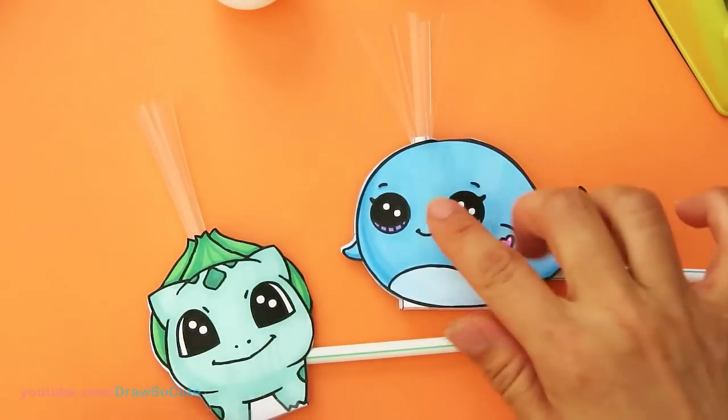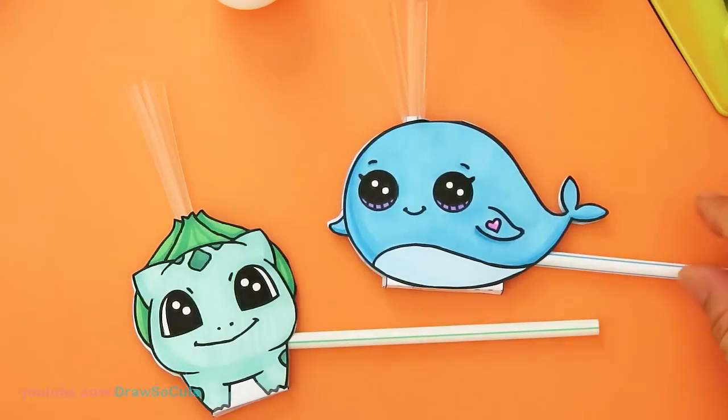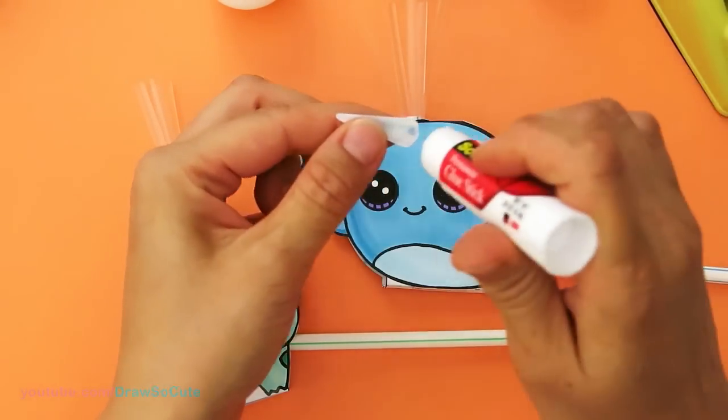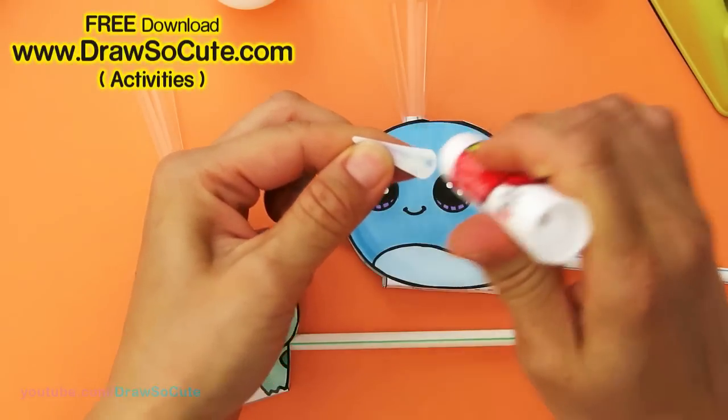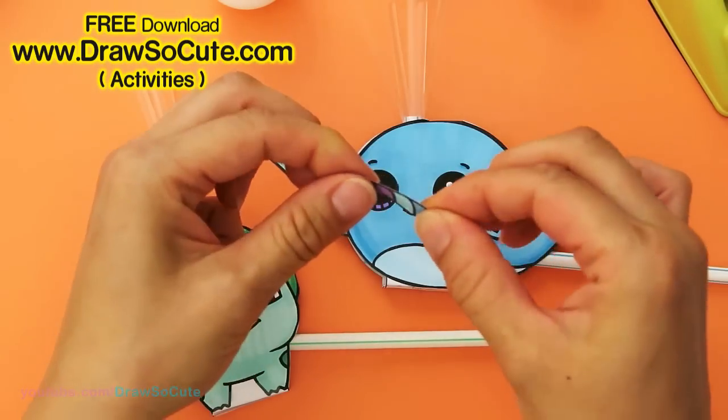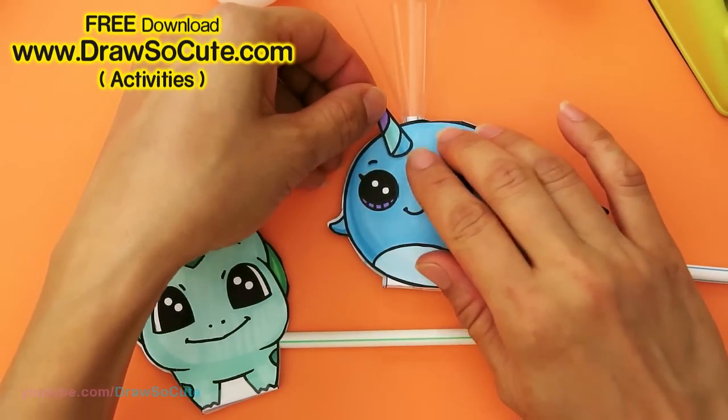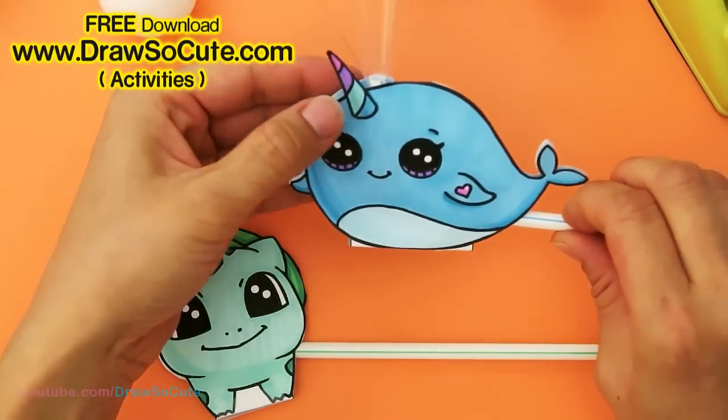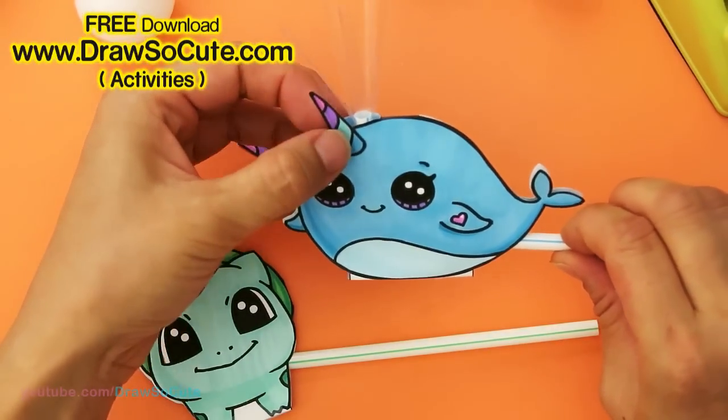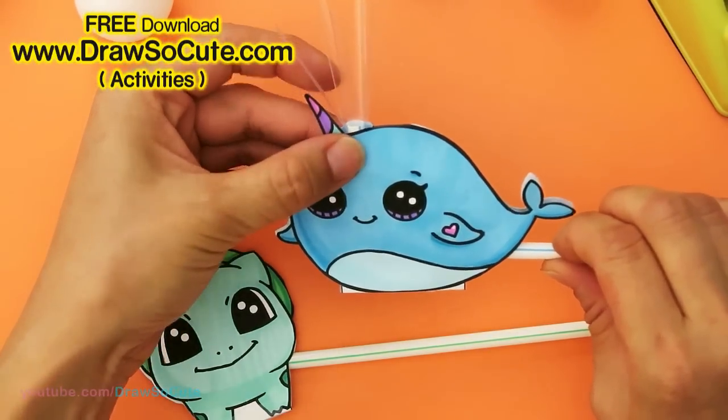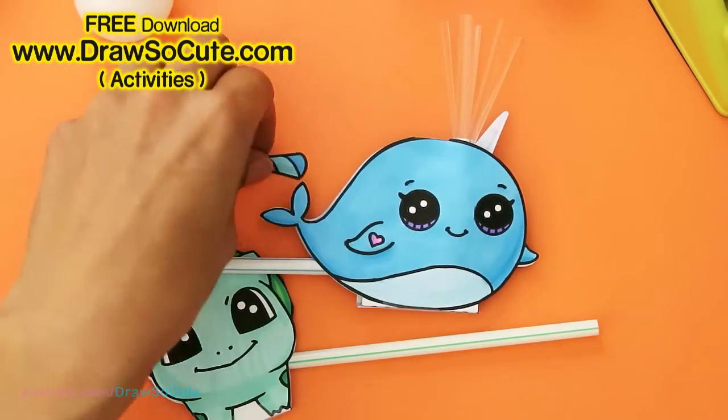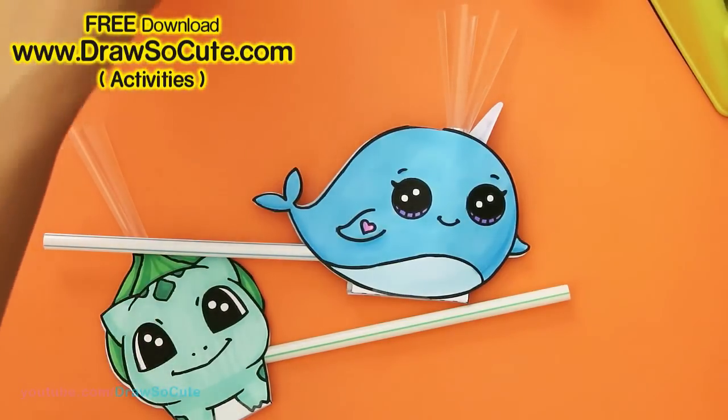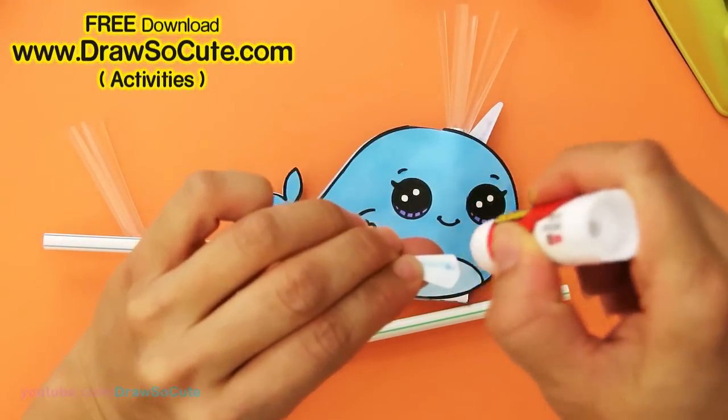And oh, I almost forgot. So if you want to make this little whale here a narwhal, take your unicorn horns, and I'm just going to put some glue right here. And then all of a sudden, I'm just going to glue this part right here. It's a narwhal. No longer a whale. So it's up to you. If you want to make it a whale or a narwhal, you can do that with the other side too. Pick this up and glue this part in.